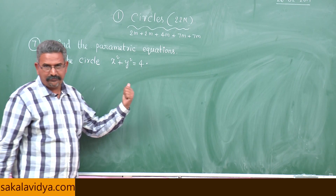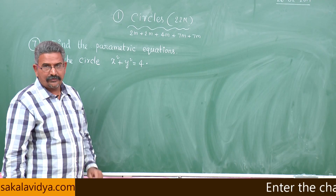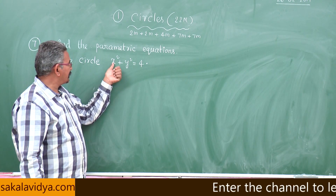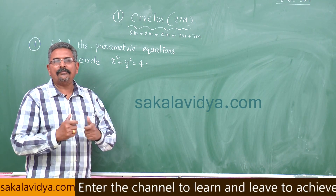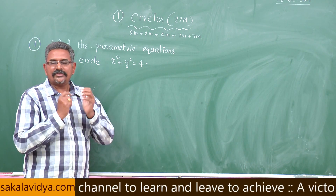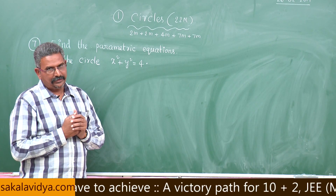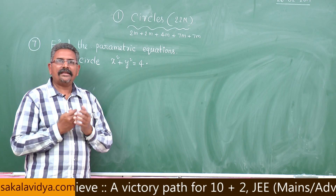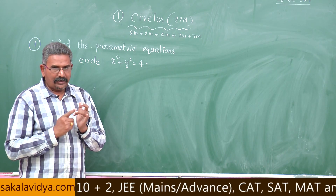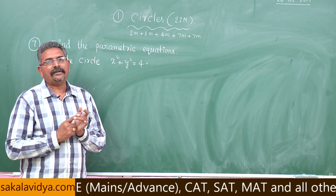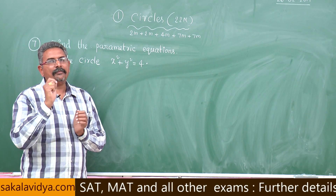If you observe this problem, x squared plus y squared equals 4 is in the form x squared plus y squared equals r squared. That is known as the standard form of the circle. If the standard form x squared plus y squared equals r squared is given, the parametric equations are x equals r cosθ and y equals r sinθ, where r is the radius and θ is known as the parameter.